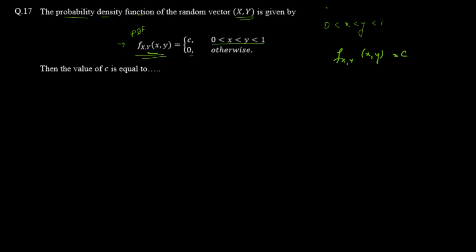We need to find the value of c. Since this is a PDF, we can simply integrate this function with respect to x and y and equate the result to 1. We need to be very careful while choosing the limits — for x, the limits go from 0 to y.